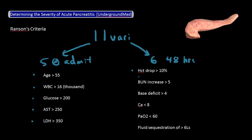The six parameters to look at 48 hours after admission include: a hematocrit drop of greater than 10% from admission, a BUN increase greater than 5 from admission, a base deficit greater than 4 — which basically means your normal bicarb level of 24 minus the patient's current bicarb is greater than 4 — a calcium level under 8, a PaO2 level under 60, and fluid buildup of greater than 6 liters, probably best measured by weight.